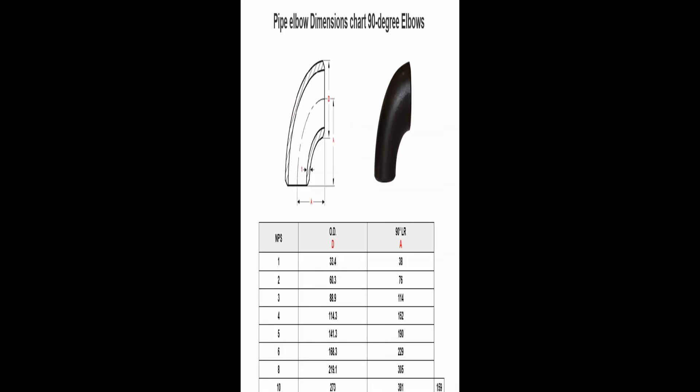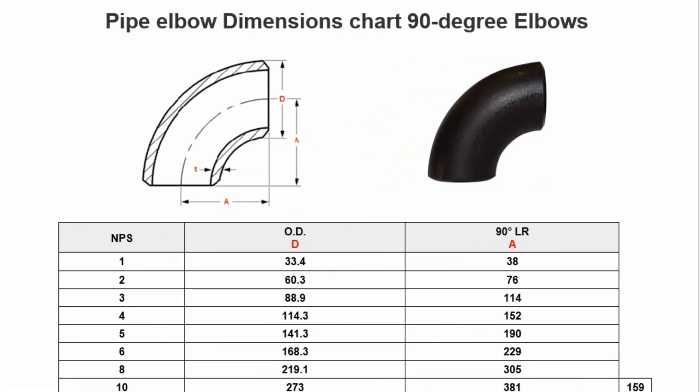For standard degrees of pipe elbows such as 90 degree elbows, center to end dimensions are available in standard pipe charts. In this table, the nominal pipe size NPS of elbows is shown in the first column.